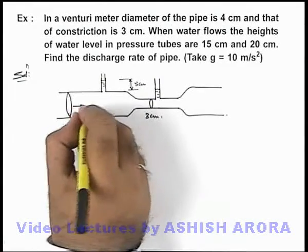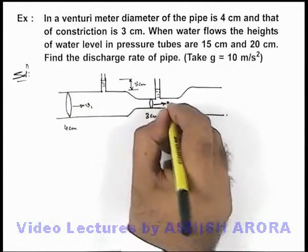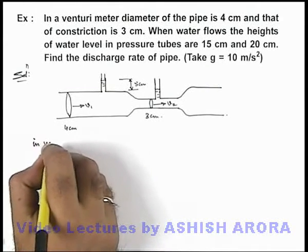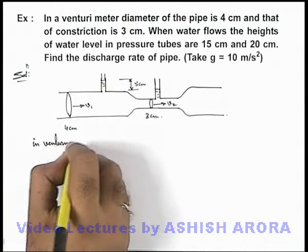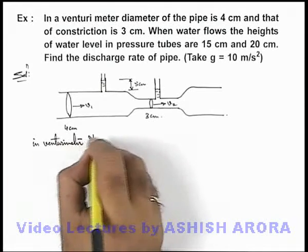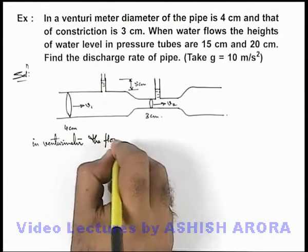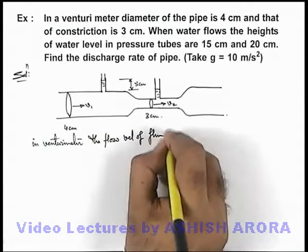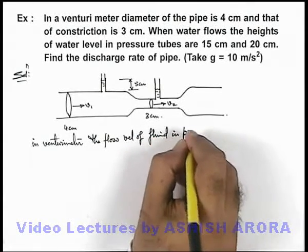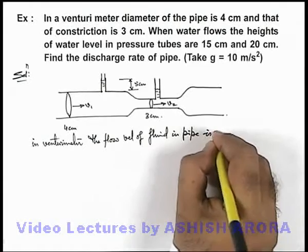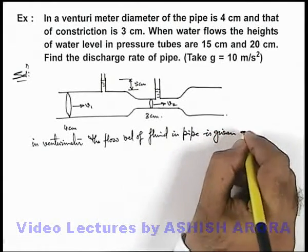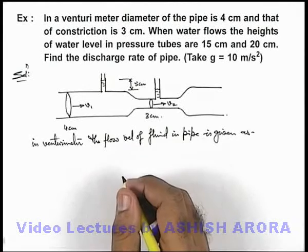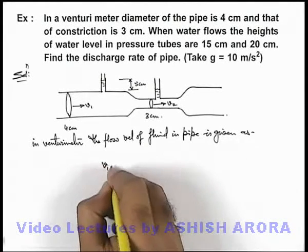Now if flow rate here is v1, flow rate here is v2, we know that in venturi meter the flow velocity of fluid in pipe is given as, this we already calculated in the separate section of venturi meter analysis.